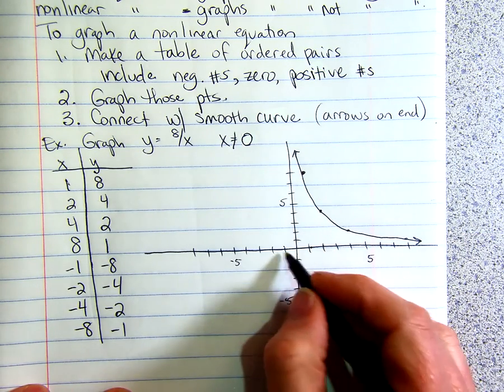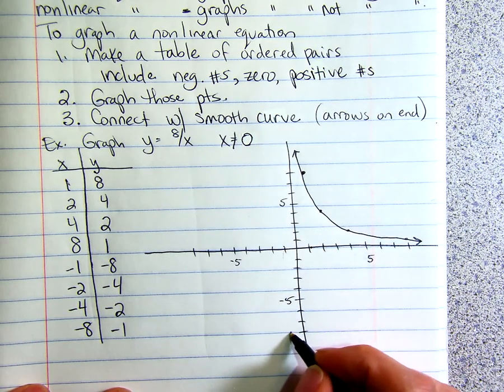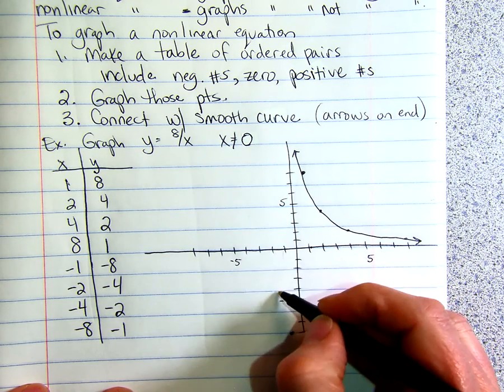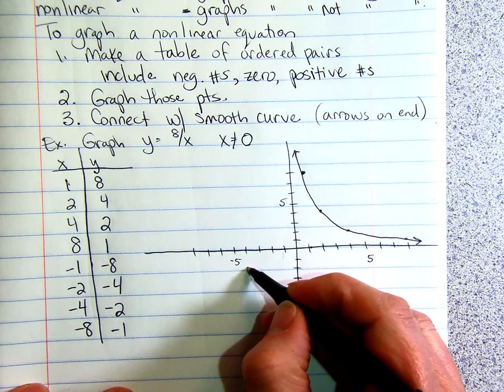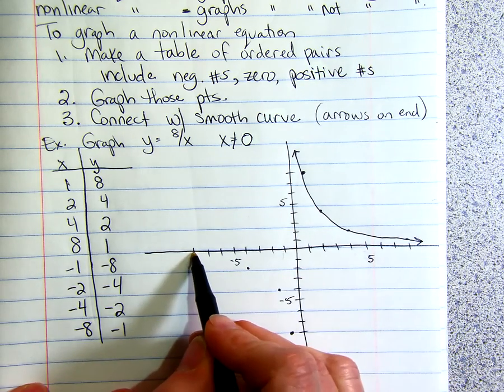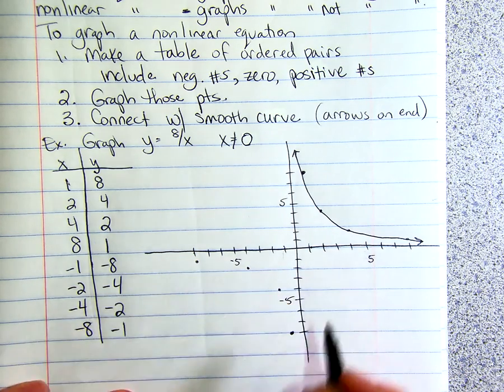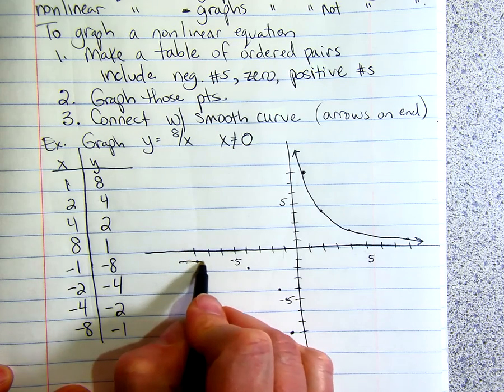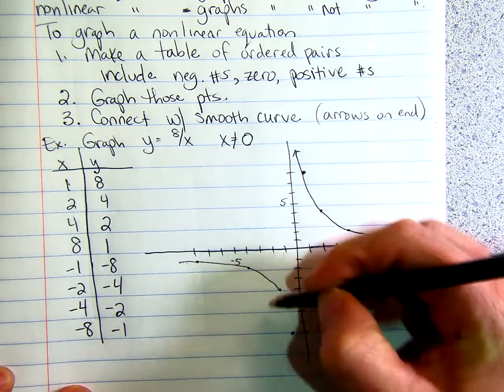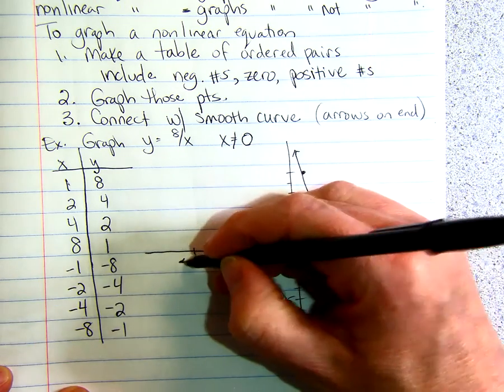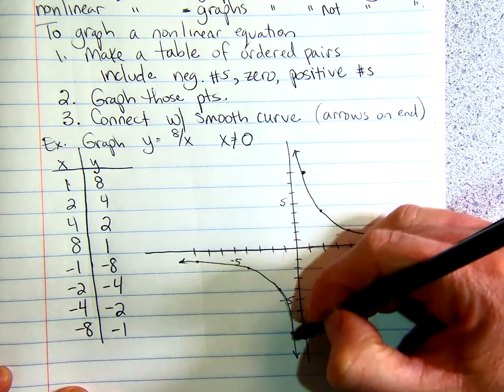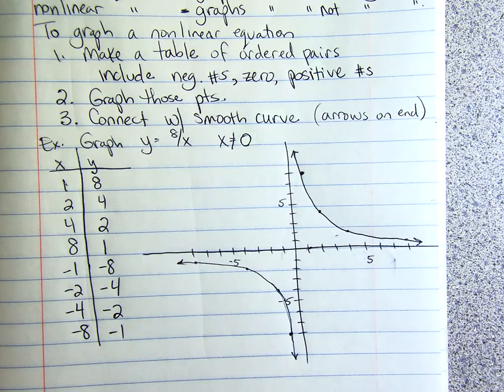When x is negative 1, y is negative 8. Negative 2, y is negative 4. When x is negative 4, y is negative 2. And when x is negative 8, y is negative 1. Notice that we picked numbers that would divide into 8 evenly, so that we didn't have to worry about decimals or fractions. We could just draw a nice smooth curve there.